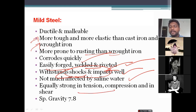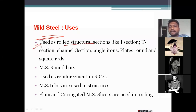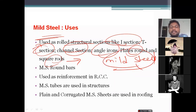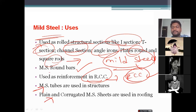Mild steel is used for rolled structural sections like I-sections, T-sections, channel sections, angle irons, plates, rounds, and square rods. MS round bars are widely used in construction for RCC structures. It is also used for MS tubes and plain and corrugated MS sheets in roof structures.